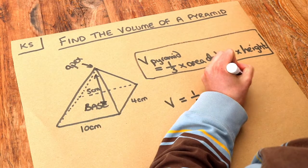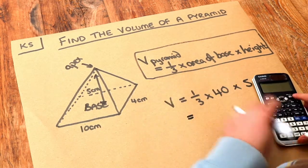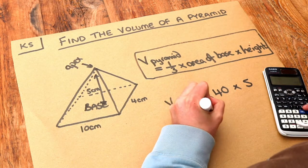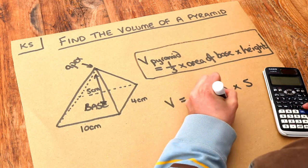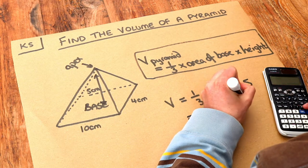The height of the pyramid is 5, and if we put that into our calculator it is 200 over 3, or if you want it in decimal form we have 66.7.